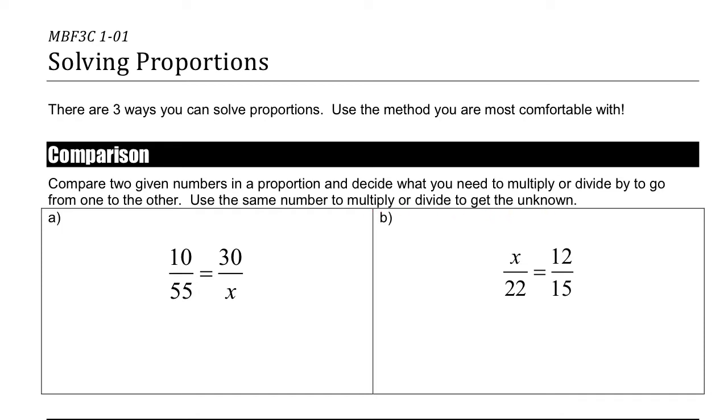So what I mean is, if I compare the two numerators, the top numbers, I can look at this and I can think to myself, OK, what do I multiply this by to get this? Well, 10 times 3 gets me 30.